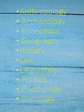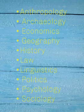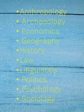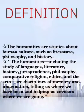Some examples of sub-branches of social sciences include: anthropology, archaeology, economics, geography, history, law, linguistics, politics, psychology, and sociology. Social science is vast and wide and there are many scopes within it.